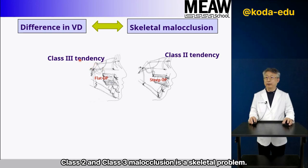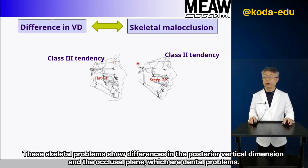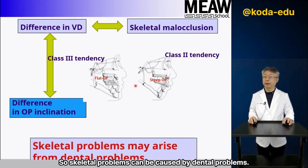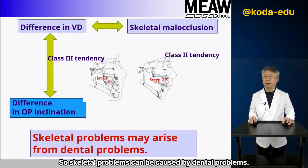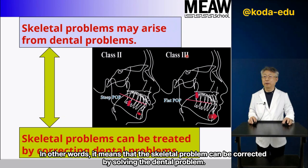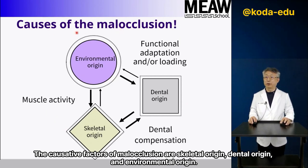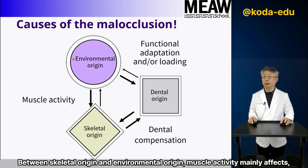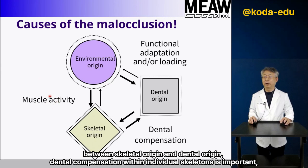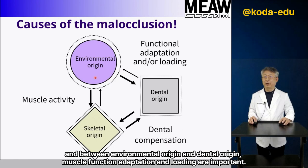To summarize: class II and class III malocclusion is a skeletal problem. These skeletal problems show differences in the posterior vertical dimension and the occlusal plane, which are dental problems. So skeletal problems can be caused by dental problems — meaning the skeletal problem can be corrected by solving the dental problem. For example, by adjusting the occlusal plane, treatment may be possible. The causative factors of malocclusion are skeletal origin, dental origin, and environmental origin. Between skeletal and environmental origin, muscle activity mainly affects. Between skeletal and dental origin, dental compensation within individual skeletons is important. Between environmental and dental origin, muscle function adaptation and loading are important.